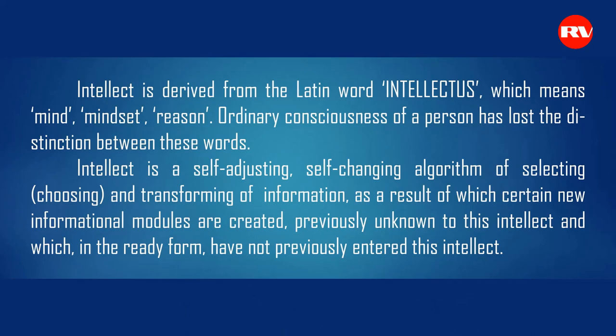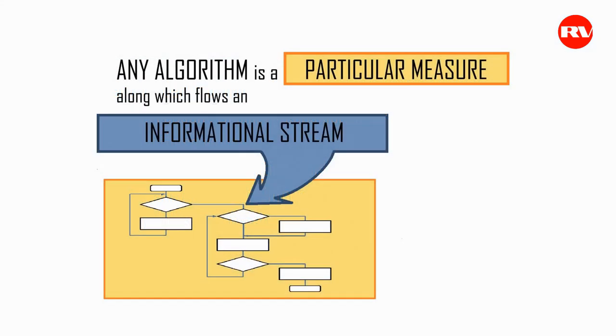Ordinary consciousness of a person has lost the distinction between these words. Intellect is a self-adjusting, self-changing algorithm of selecting and transforming of information, as a result of which certain new informational modules are created, previously unknown to this intellect, and which, in the ready form, have not previously entered this intellect. Here is a scheme which demonstrates what working out new informational modules means.